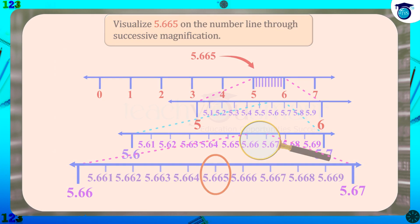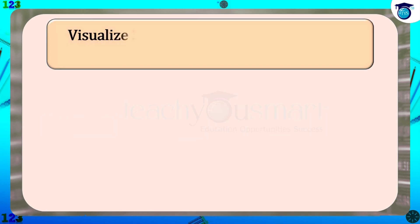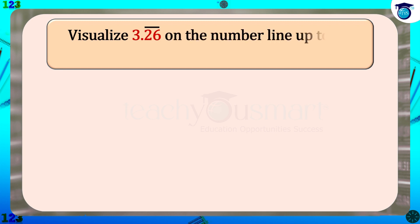Let's see the visualization of a non-terminating repeating decimal on the number line. Visualize 3.26 bar on the number line up to 4 decimal places.